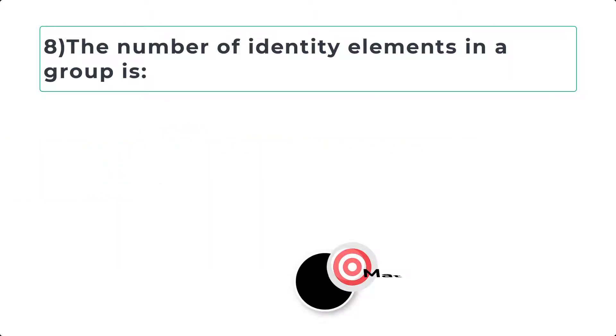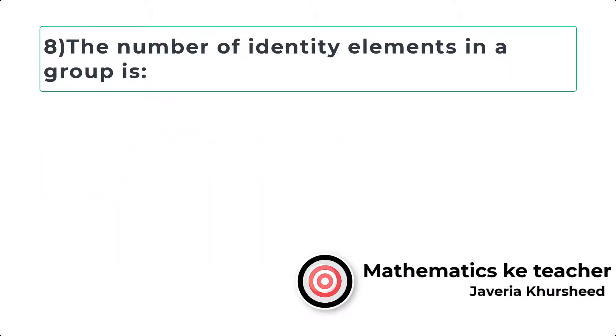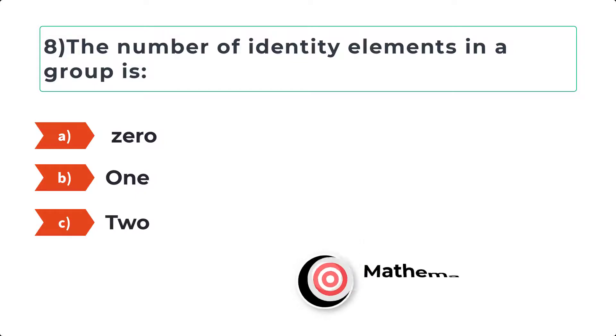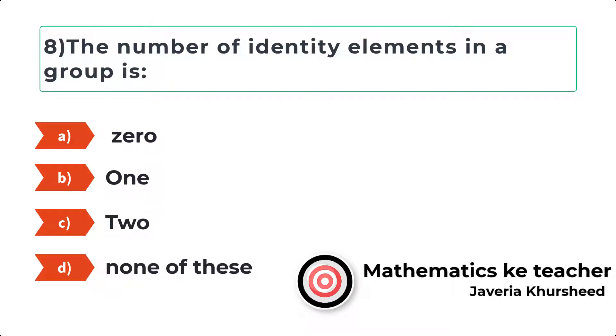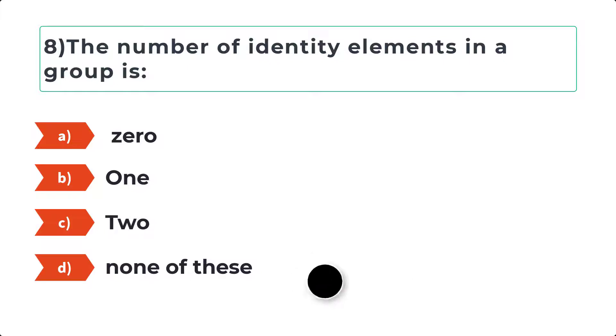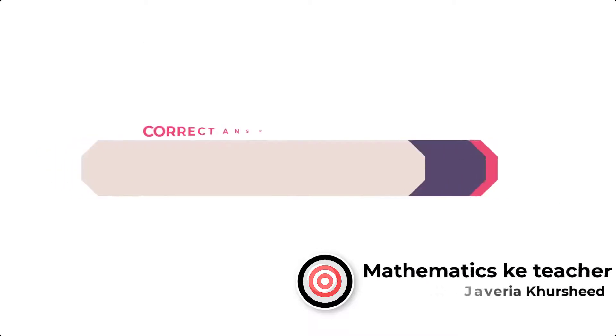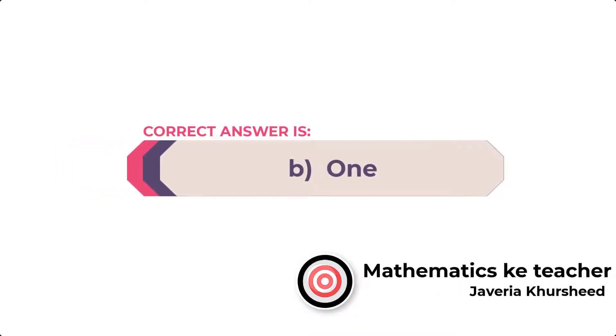Question 8: The number of identity elements in a group is: A, 0; B, 1; C, 2; D, none of these. Correct answer is B, 1.